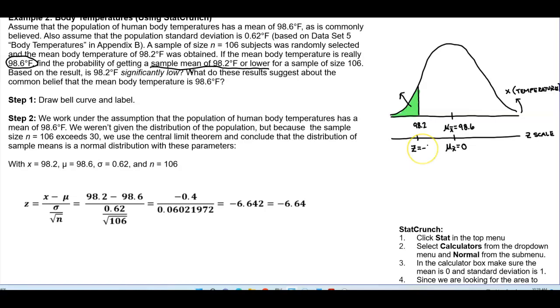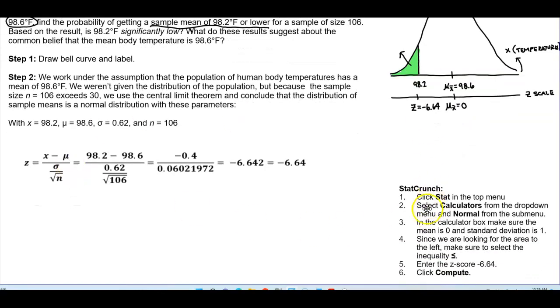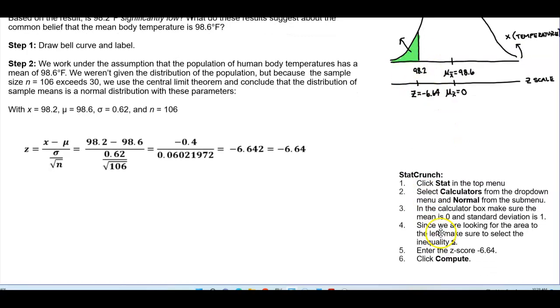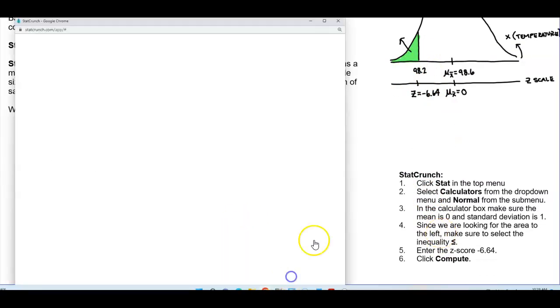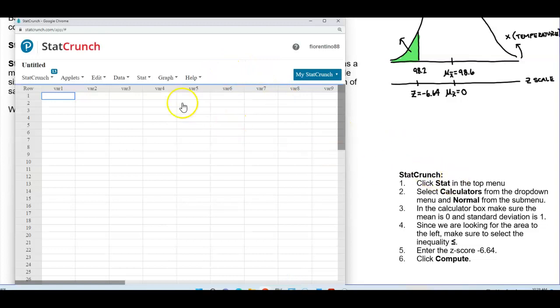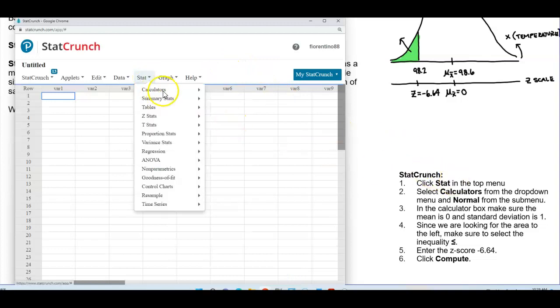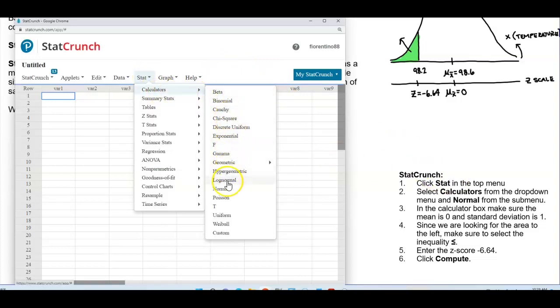So therefore, this Z score negative 6.64 is representative of the value of 98.2. So now what we're going to do is we want to be able to find the area to the left using StatCrunch. So we're going to go ahead and then click on StatCrunch. So we're going to click Stat at the top of the menu, go to calculators, and then scroll all the way down to normal.